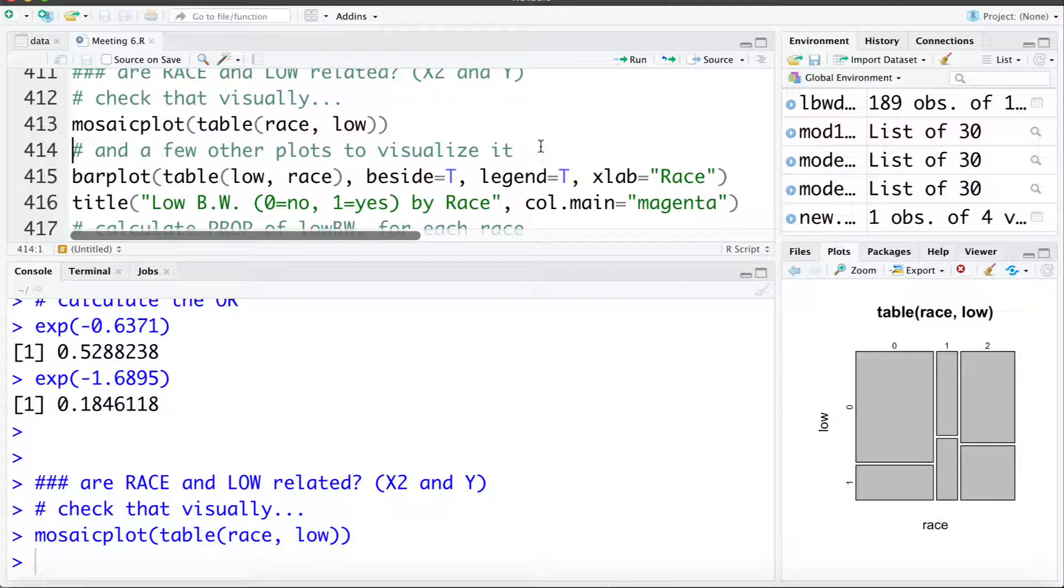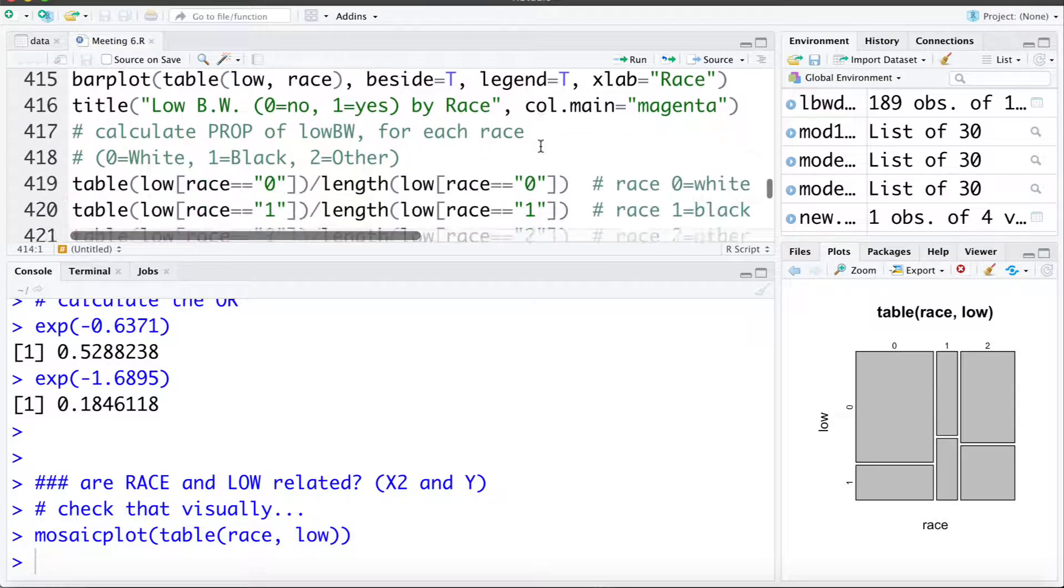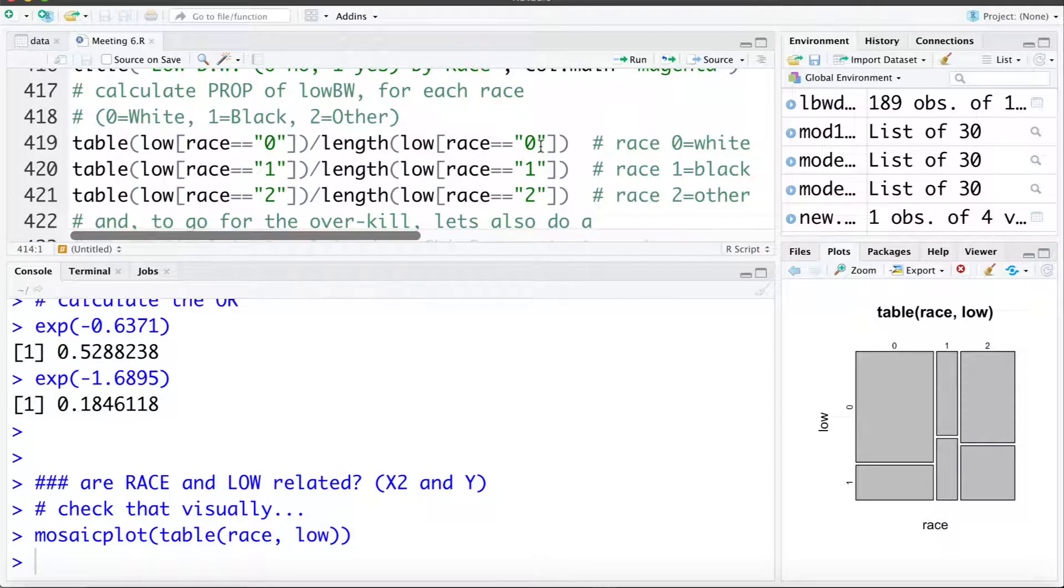I won't go through and carry out these other ones, I'll just scroll through and mention them but they're the same approaches we looked at previously. We can also make side by side bar plots. We can calculate the proportion of low birth weight for each of the race categories.